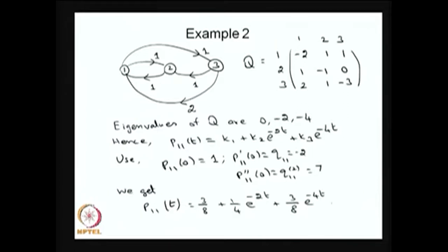Similarly, I can find P₁₂(t) and P₁₃(t). I do not need to solve for P₁₃(t) in the same way because, once I know P₁₁(t) and P₁₂(t), then P₁₃(t) is simply 1 minus those two probabilities, since the summation of probabilities equals 1. This is the other way of getting the time-dependent solution — the transition probability of the system being in state j given that it was in state i at time 0.